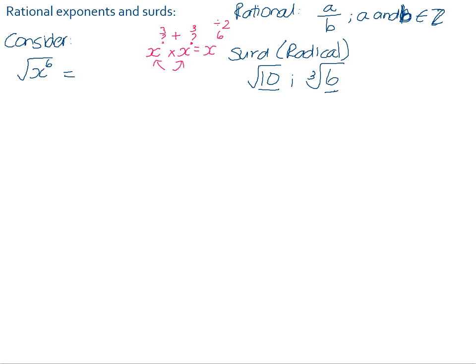So it means that your square root of x to the power of 6 is x cubed. If you want to find the square root of x to the power of 4, again, you need to look at what is half of the value of that exponent, and that is x squared. The same thing applies even if your exponents are odd numbers — for example, x to the power of 5. If you wanted to find out what the square root of that would be, you would need to work out the value of 5 divided by 2, and we can just leave that as a fraction. So this is where we get our rational exponent from. In exponent form it looks like that, and in surd form it looks like this. So we can see that there is a relationship between the surd form and a rational exponent.